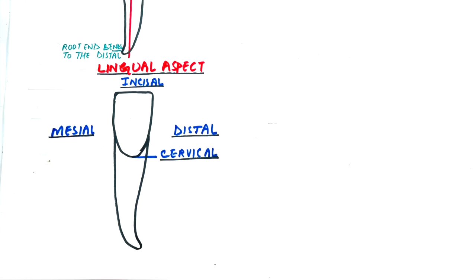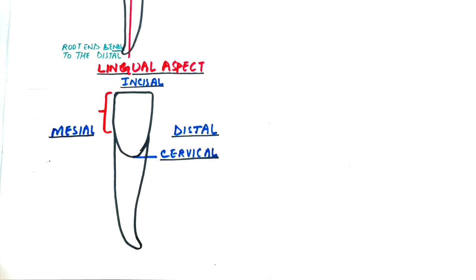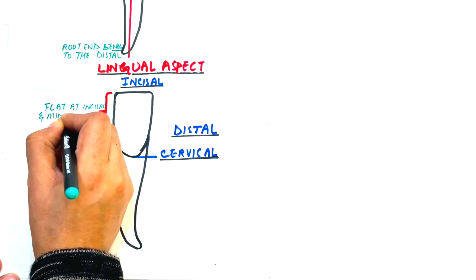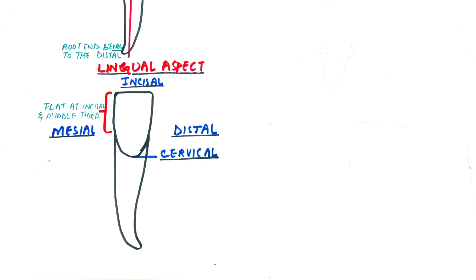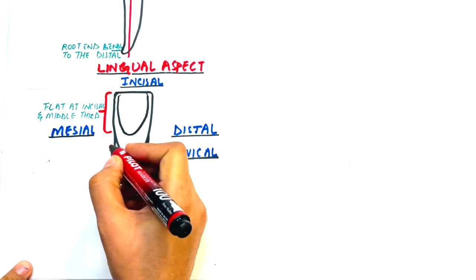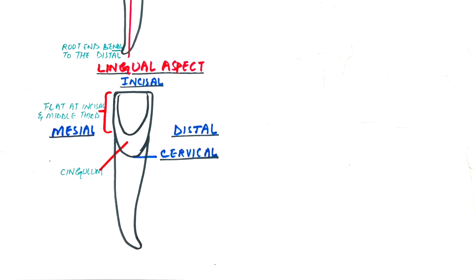The lingual surface of the tooth at the incisal and middle third is flat. It then becomes convex as it progresses towards the cervical margin. This convexity at the cervical third is made by the cingulum. The cingulum, however, is not as prominent as in the maxillary incisors, and no developmental groove marks this cingulum.